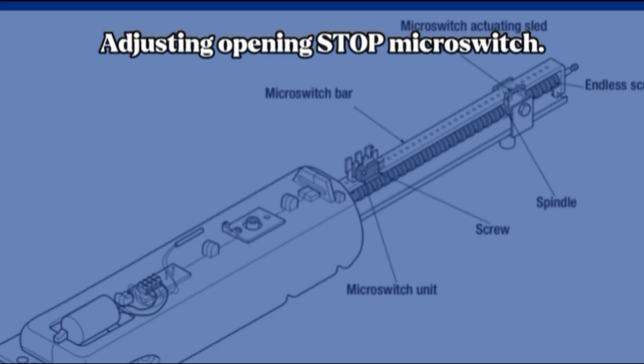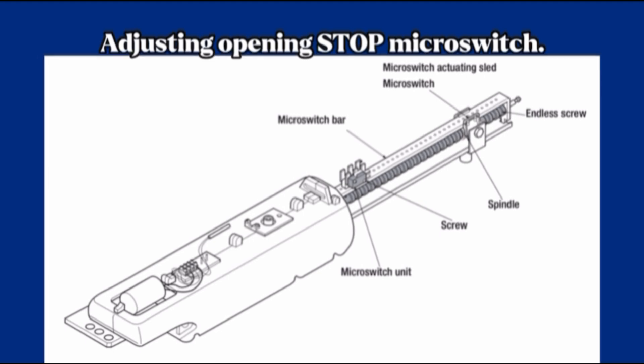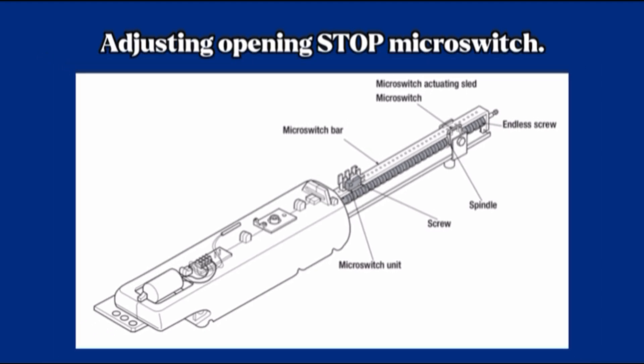Adjusting opening stop microswitch. Release the gear motor and set the gate leaf to the full opening position required. Slide the microswitch unit on the microswitch sled until the same is inserted by making contact with the microswitch actuating sled. Secure the microswitch unit with the screws.